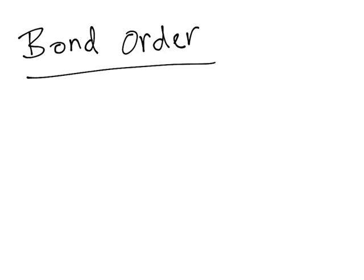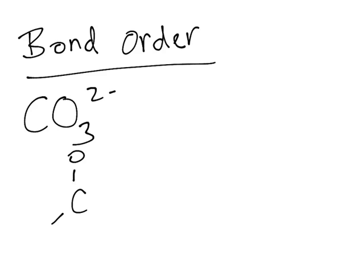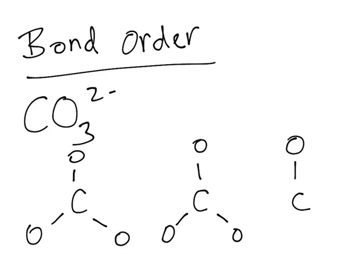Now, another concept I wanted to talk about is bond order, which is related to resonance. The best way to learn this is with an example. Let's draw CO₃²⁻, the carbonate ion, which also has three different resonance structures. We have three oxygens. Because the formal charge is negative two, that means we'll have two oxygens that don't have double bonds — so that's where the resonance occurs. Just the moving of that double bond is what makes them different.